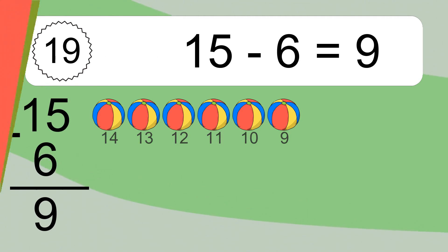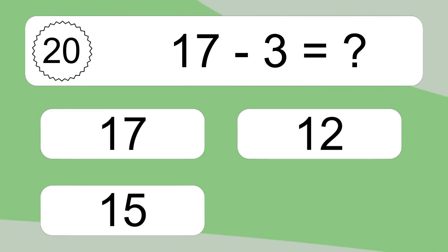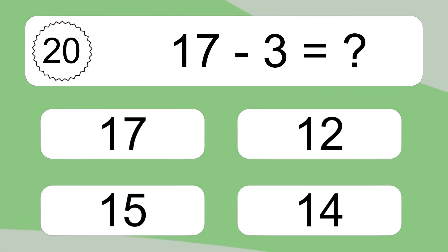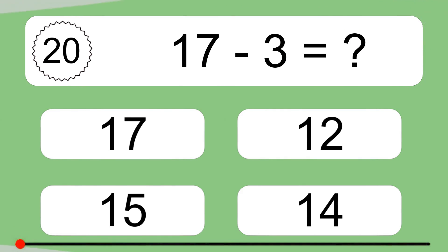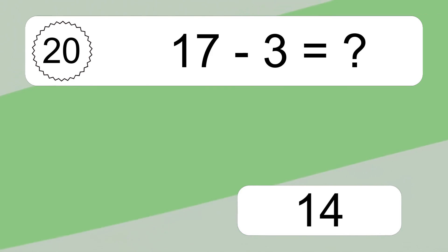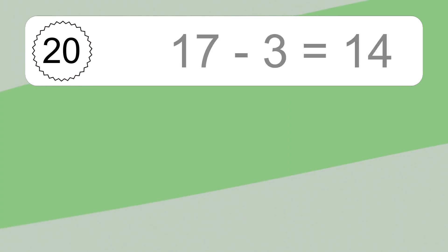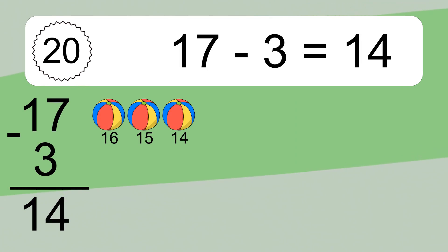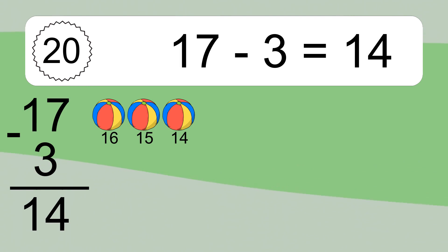17 minus 3 equals what? 17 minus 3 equals 14. Let's count it: 16, 15, 14.